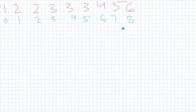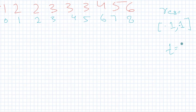We have nine elements. Initially, we'll take a result array that will contain [-1, -1]. Our input target is 3. Now let's talk about the brute-force approach.